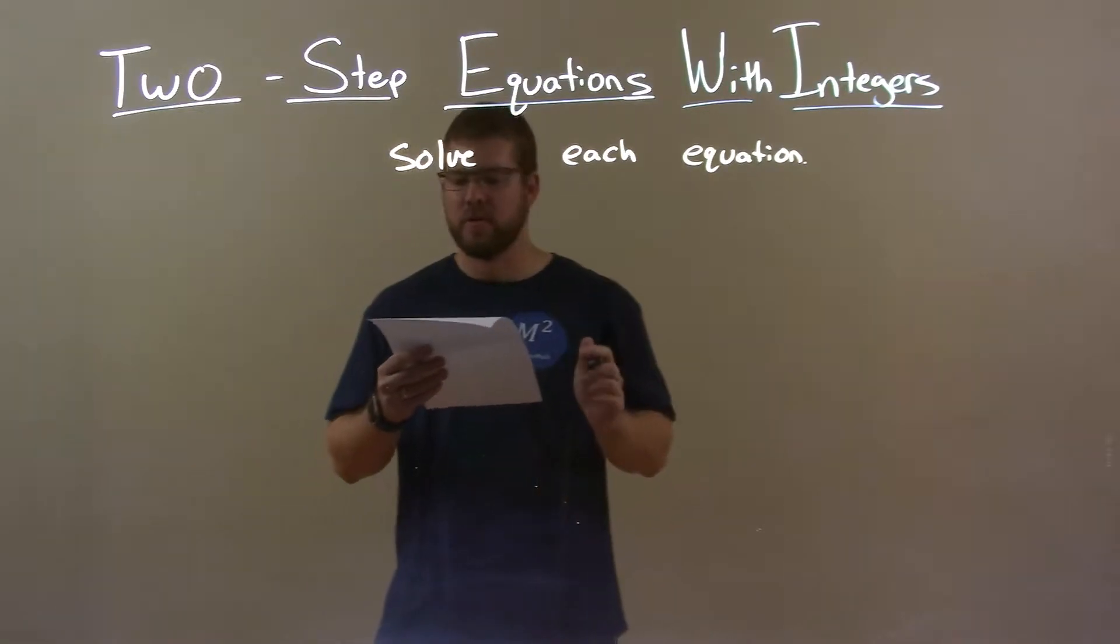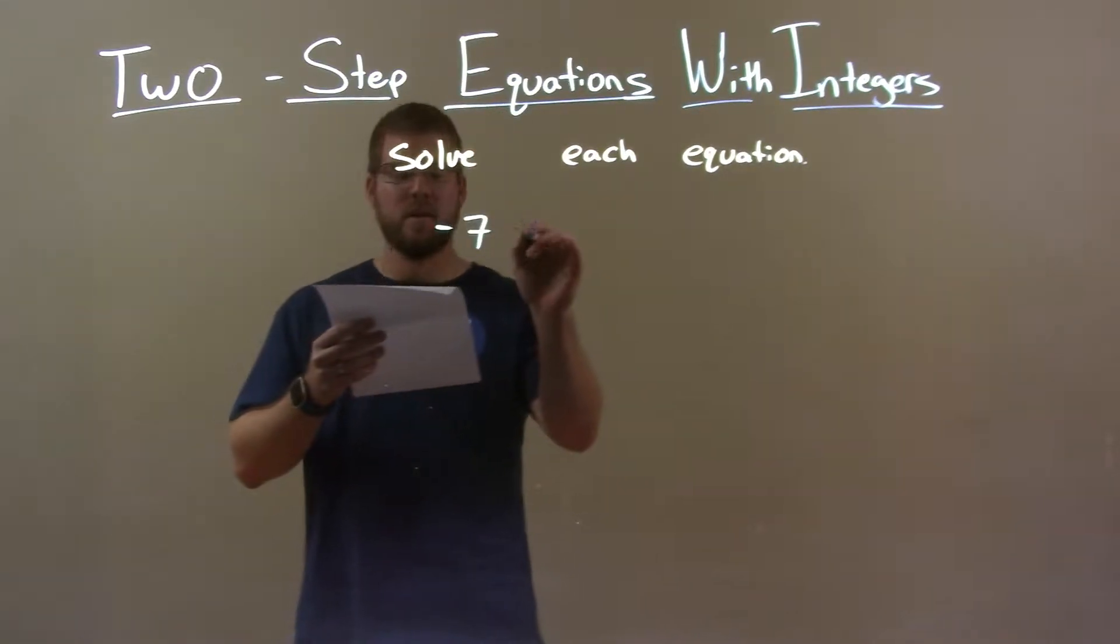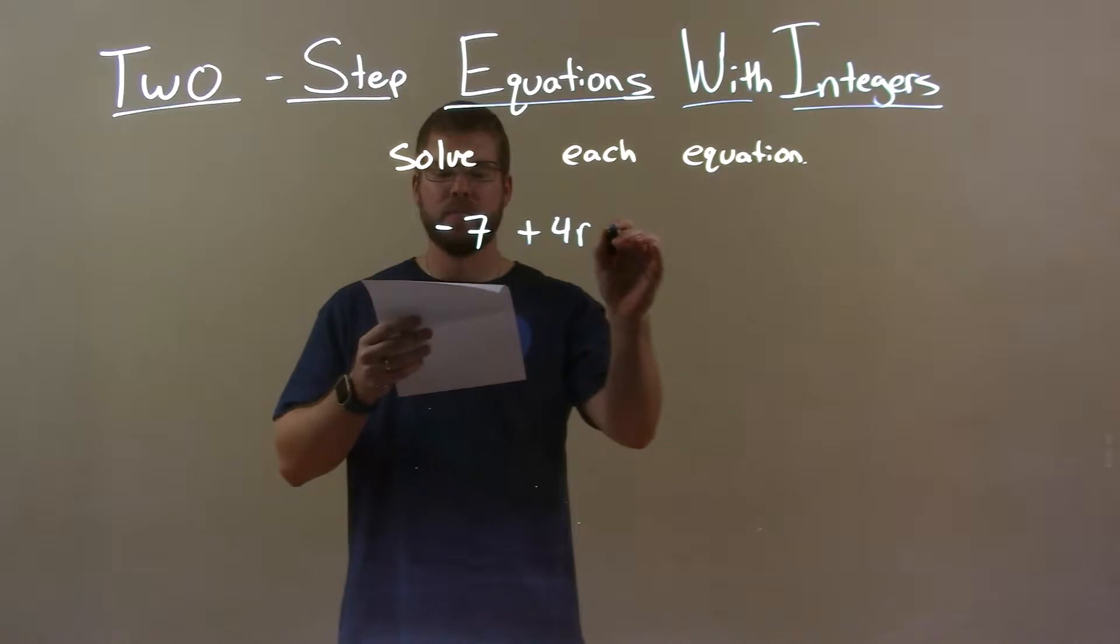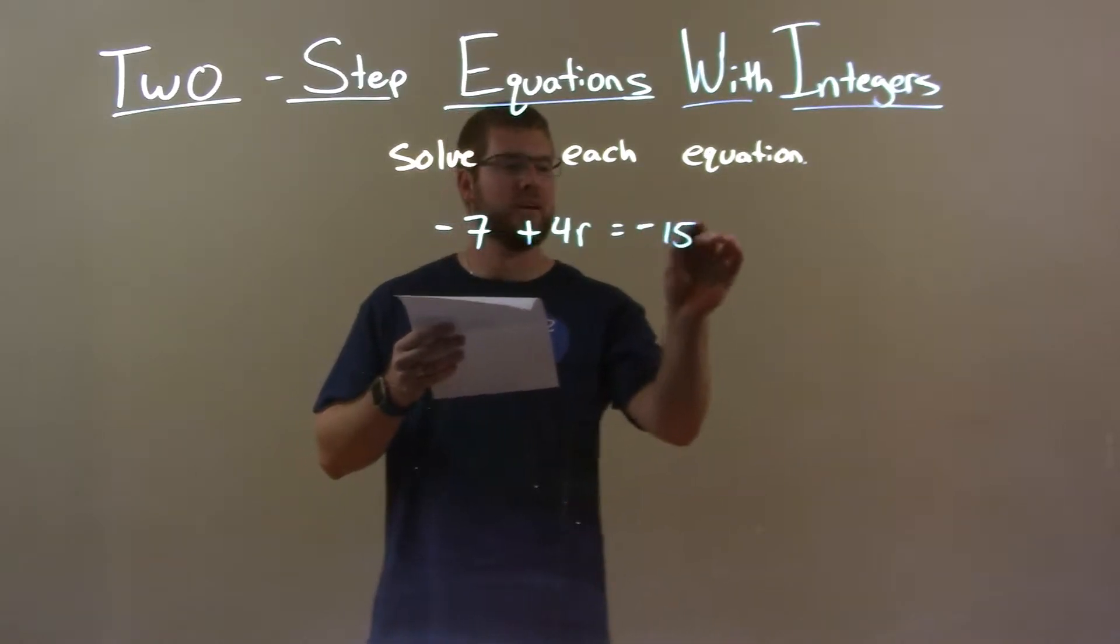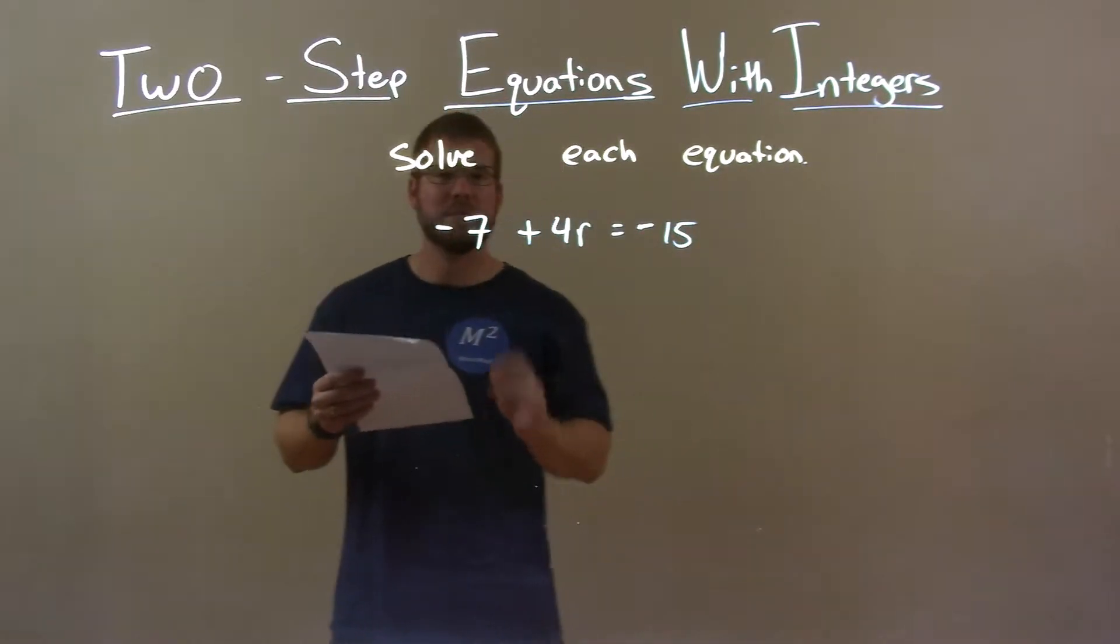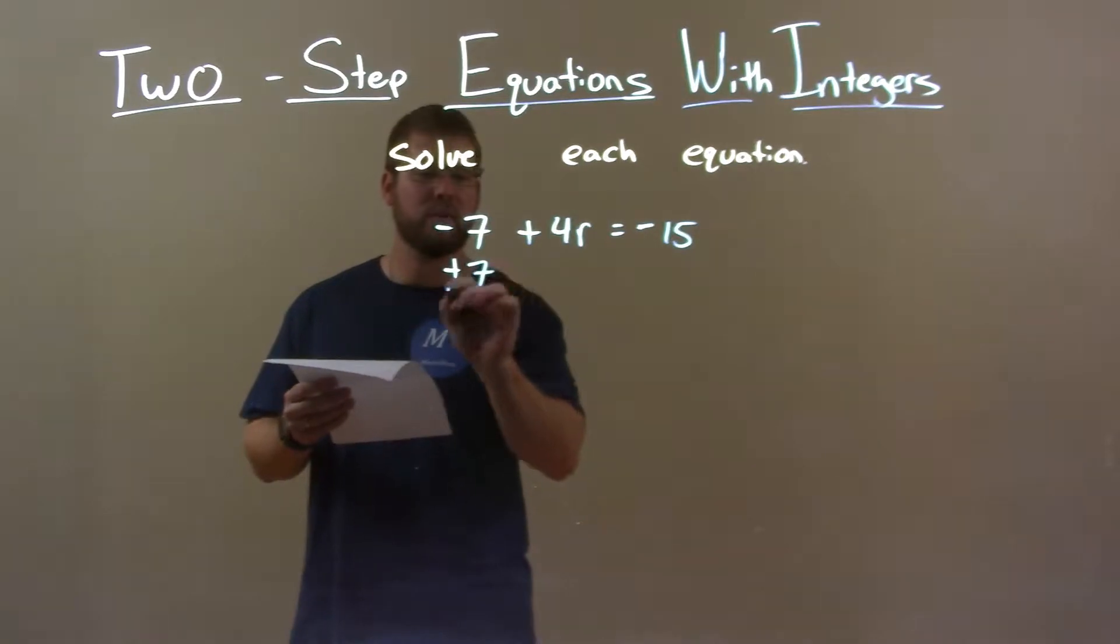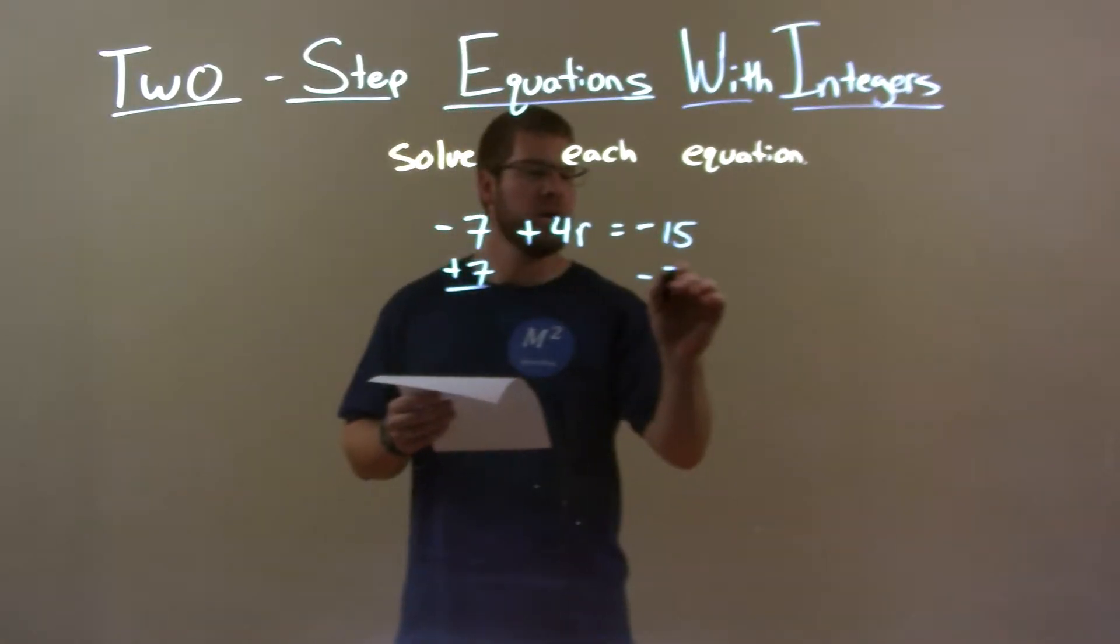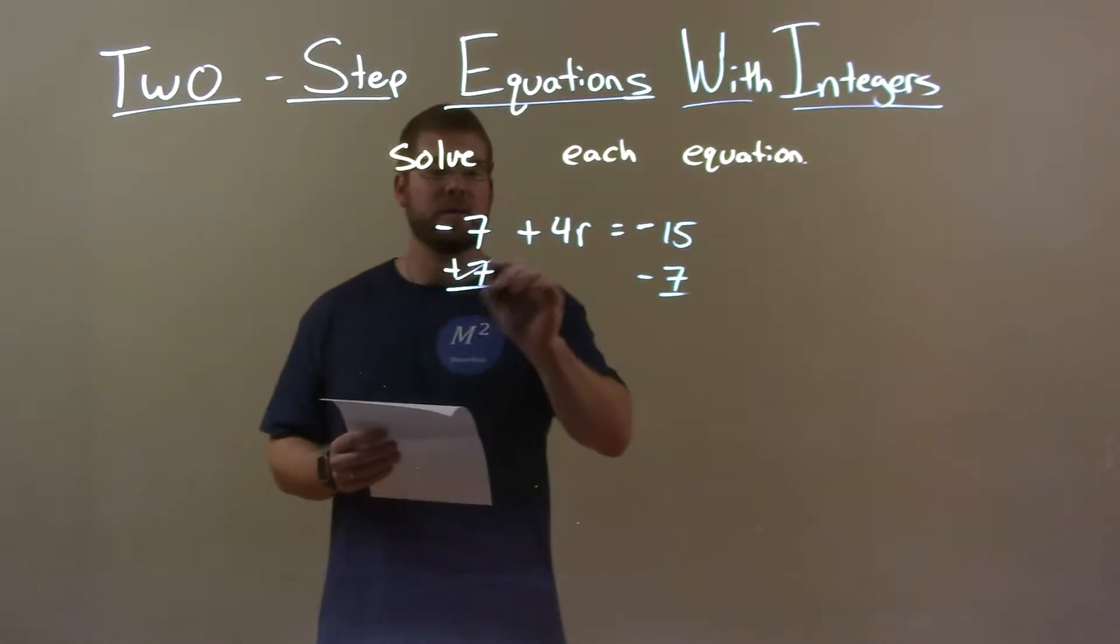Now, if I was given this equation negative 7 plus 4r equals negative 15. First thing I want to do is add a 7 to both sides, since we're subtracting it in a sense there. If I add a 7, it will eliminate the negative 7 there.